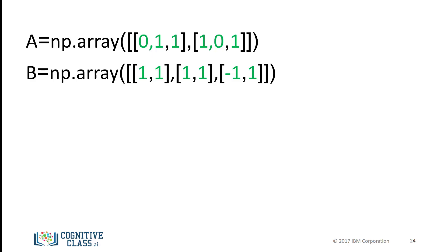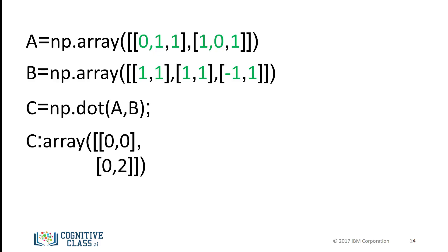In NumPy, we can define the NumPy arrays A and B, perform matrix multiplication, and assign it to array C. The result corresponds to the matrix multiplication of arrays A and B. There is a lot more you can do with NumPy — check out NumPy.org.